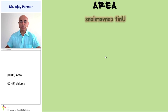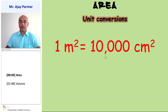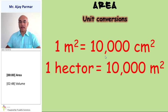Area. Some unit conversions are to be remembered in order to solve sums of area. 1 meter square is equal to 10,000 centimeter square. Whereas 1 hectare is equal to 10,000 meter square.